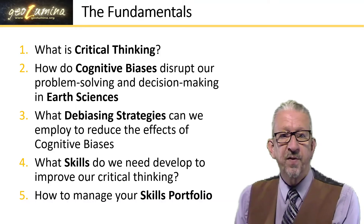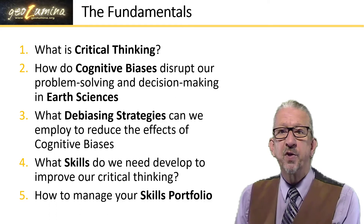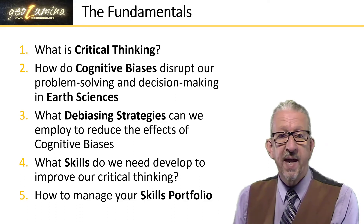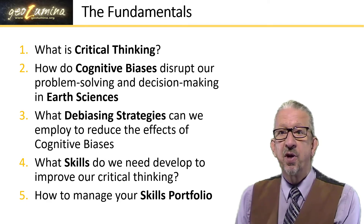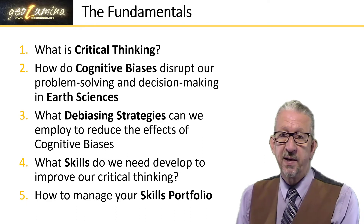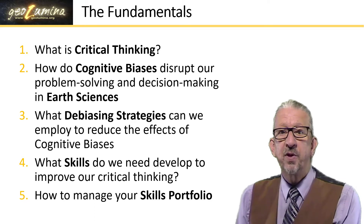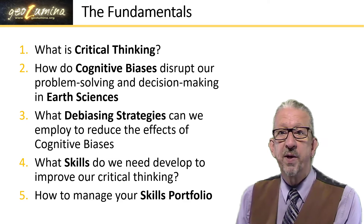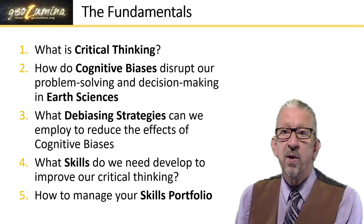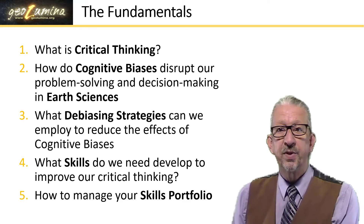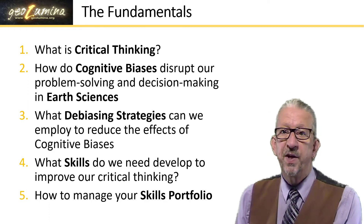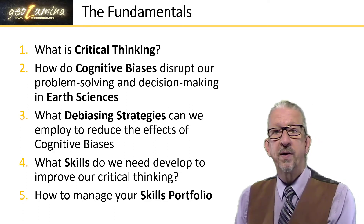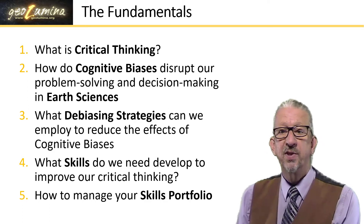Just to remind ourselves: five chapters. The first one focusing on what is critical thinking. The second chapter will focus on the nature of cognitive biases in earth science. The third chapter will be focusing on debiasing strategies — how do we avoid cognitive biases. Chapter four will look at the skills that we require to improve our critical thinking, and chapter five will finish by looking at ways in which we can manage and develop our skills portfolio.